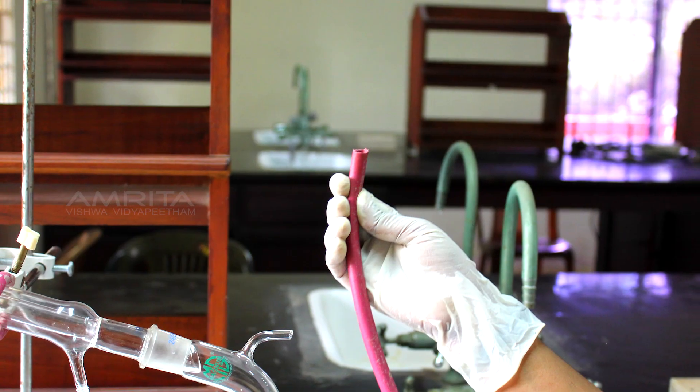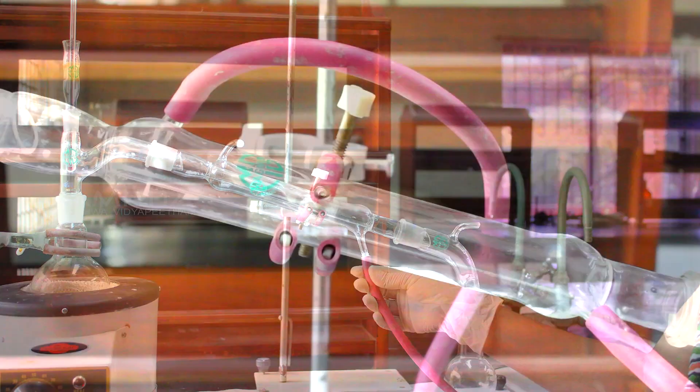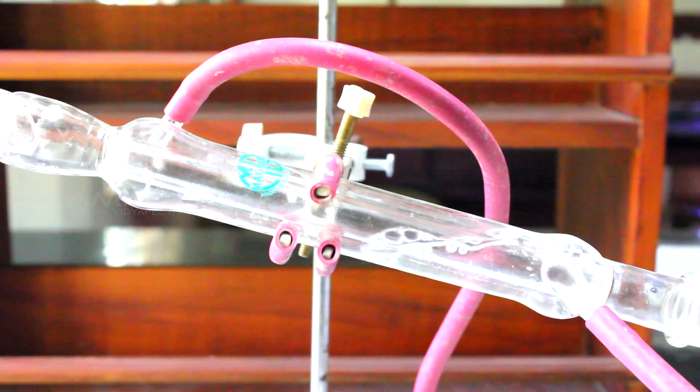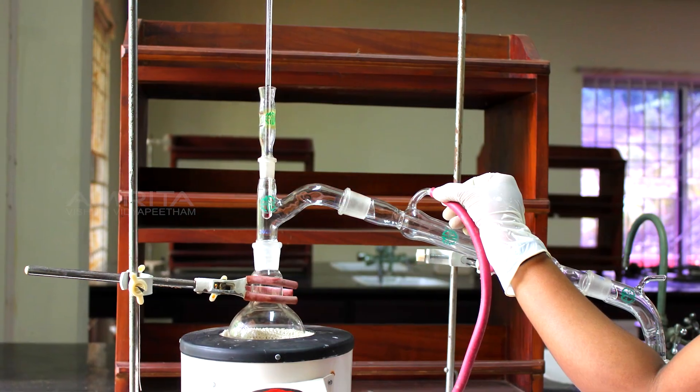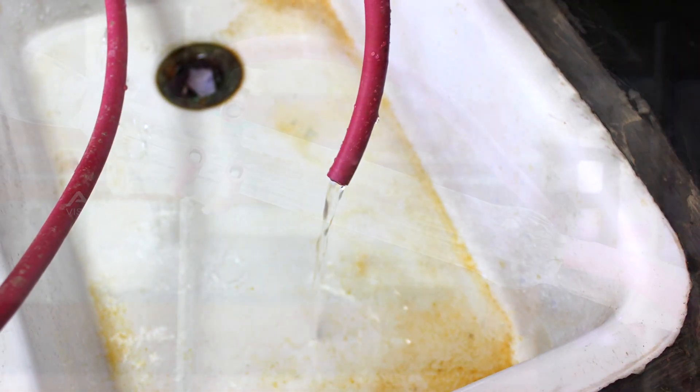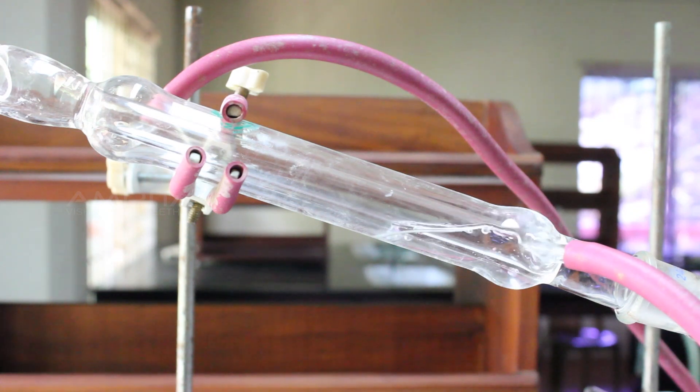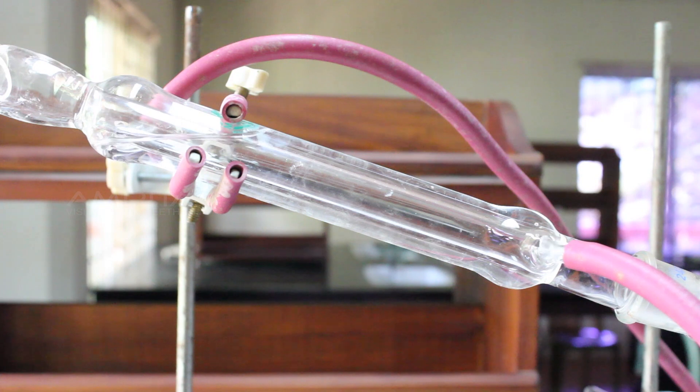Then, connect a rubber tube between the tap and the inlet of the condenser to allow cold water to enter. Similarly, connect another rubber tube to the outlet of the condenser to pour the hot water from the condenser to the sink. Open the tap so that water flows through the tube and fills the condenser and then comes out through the outlet.